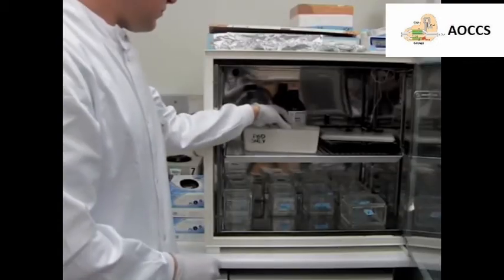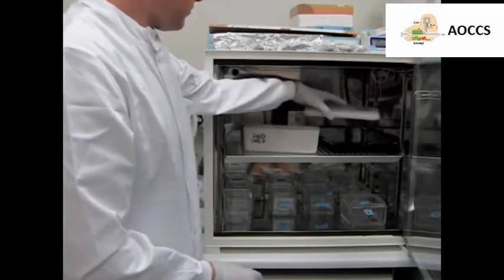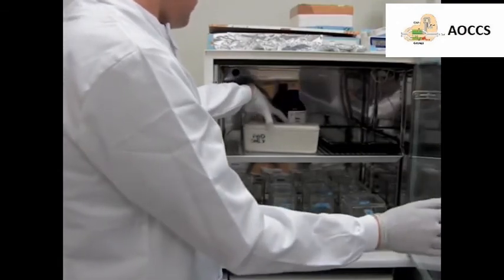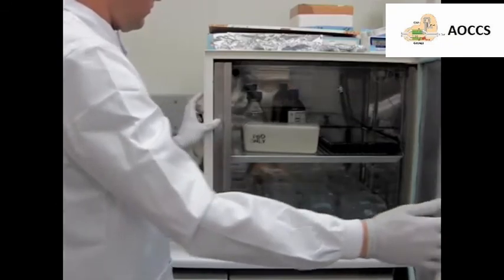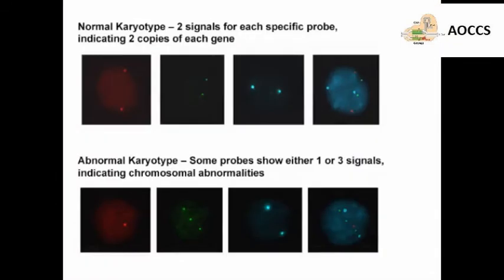The chromosome spread was then hybridized to probes specifically selected to identify potential chromosomal disorders. In this case, deviations from the expected pattern of hybridization signals indicate disruptions in chromosome number or structure.